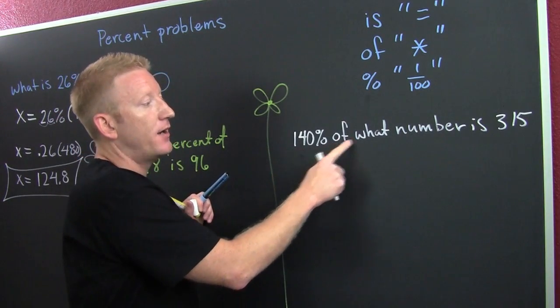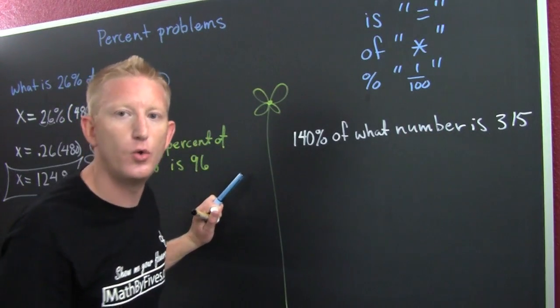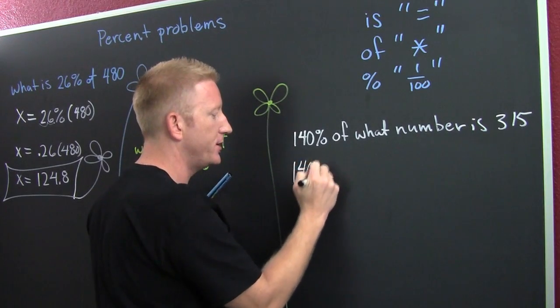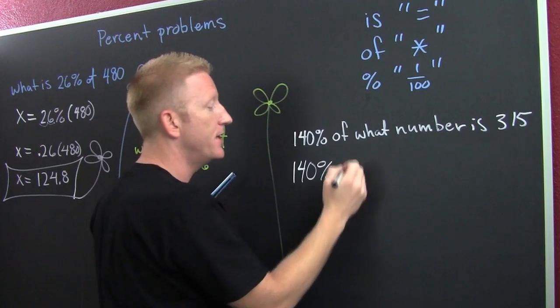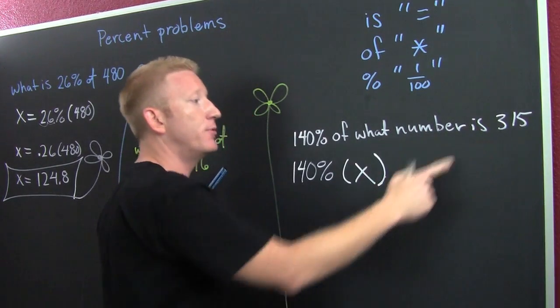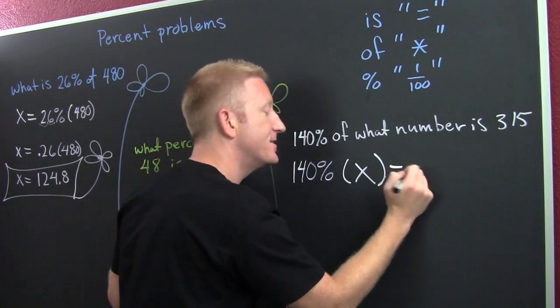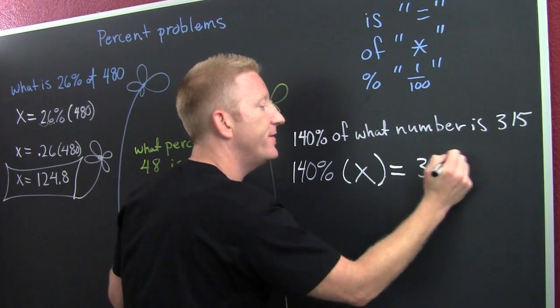140% of what number is 315. So we go with direct translation. 140% of, what was of? Of was times. Times what number. Whenever I see what number, I'm going to put x. But wait, what is, is, is, is that equals what? 315.